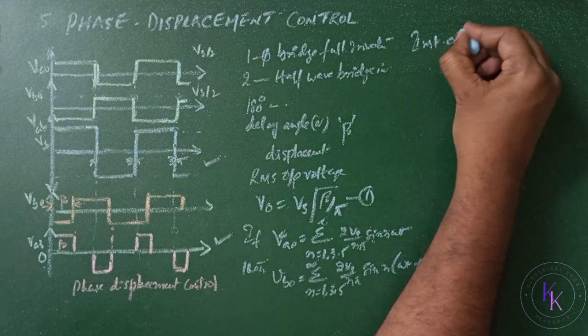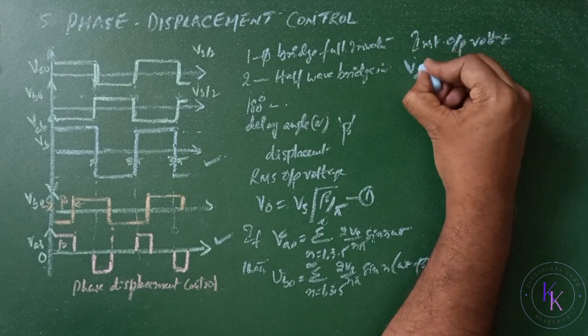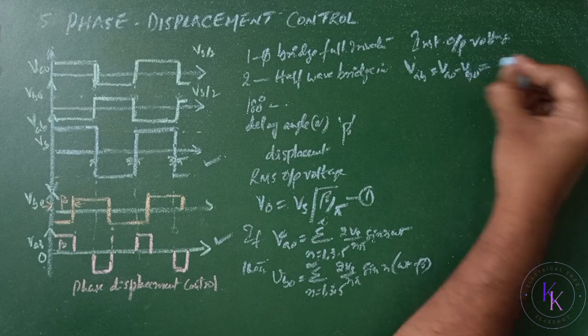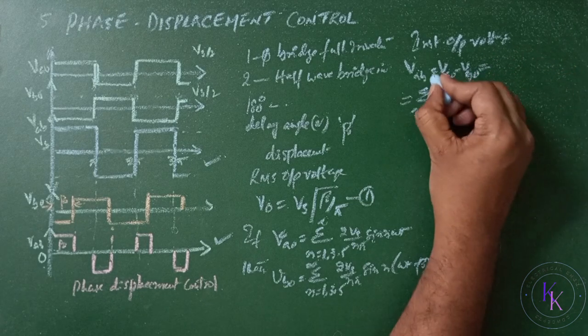Instantaneous output voltage VAB equals VA0 minus VB0, that equals sigma n equals 1, 3, 5 to infinity. And VB0 equals sigma n equals 1, 3, 5 to infinity, 2Vs by n pi sine n omega t minus beta.